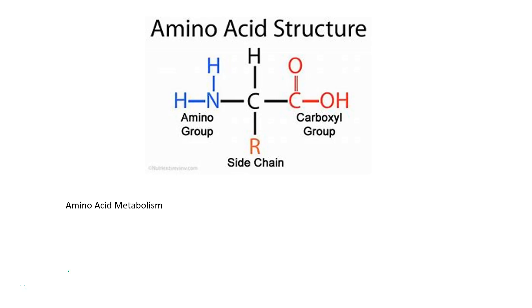Hello everyone, today we will be talking about amino acid metabolism. Quick recap of amino acids: amino acids are the building blocks of proteins, and the basic structure of an amino acid consists of a central alpha carbon which is attached to an amino group, a carboxyl group, hydrogen, and a variable R group.